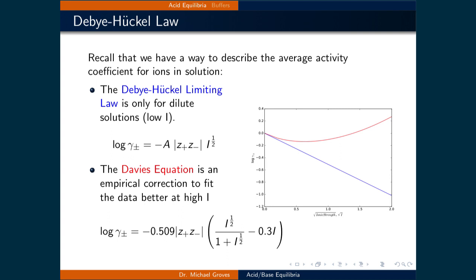If the square root of the ionic strength is below 0.2, then we can use the simpler limiting law. However, if the square root of the ionic strength is larger than 0.2, then we will use the Davies equation, as it offers a better empirical fit to the activity coefficient.